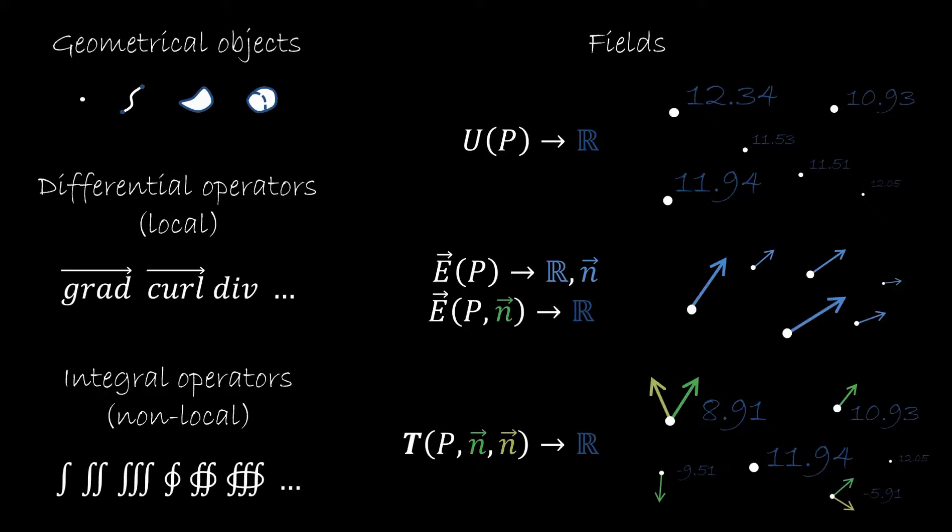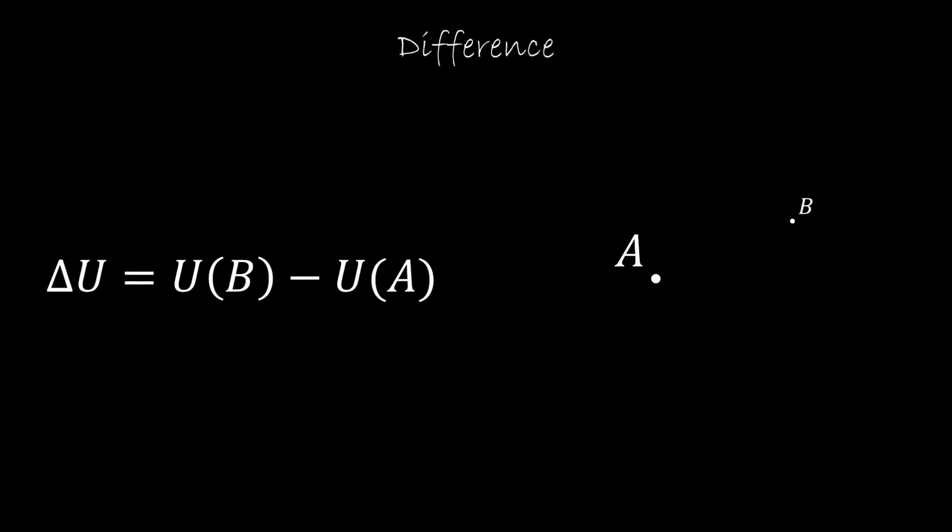So we'll start with a very simple case. We'll consider a scalar field and we'll want to compare values at two different points. How do we compare the value at two different points? Well, we just do the difference between one value and the other. And so we have this delta U, which is our difference operator.